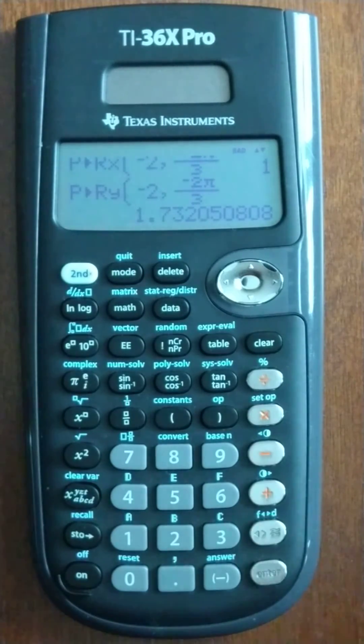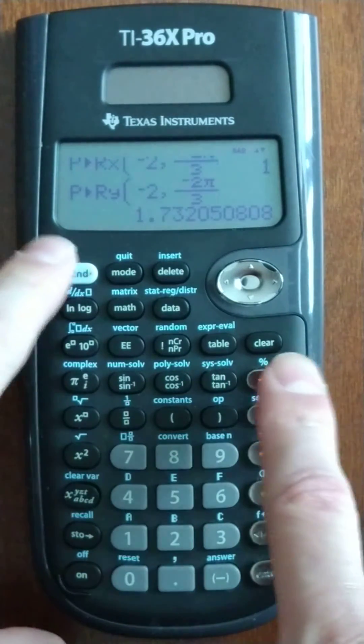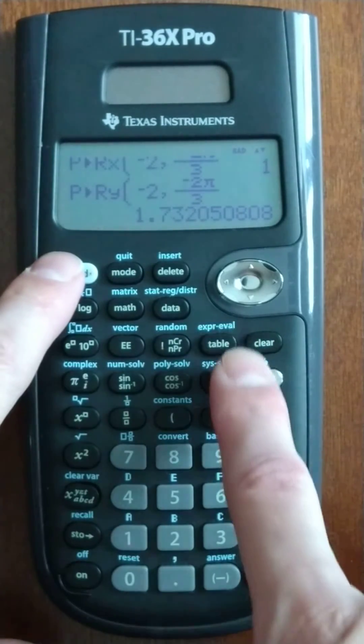And it worked with the negative 2, which is slick. It's clunky, but it does work. Alright, now I want to do the other way around. It's very similar.